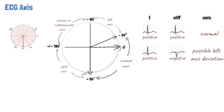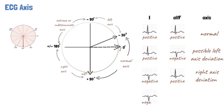If the deflection is negative in lead 1 and positive in lead AVF, there is right axis deviation. While if the deflections are negative in both leads 1 and AVF, there is extreme axis deviation.